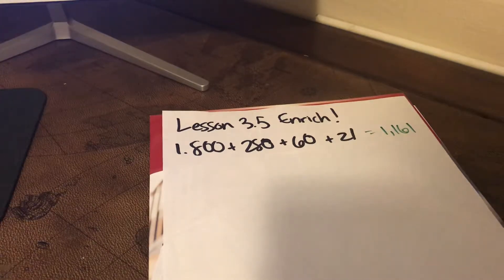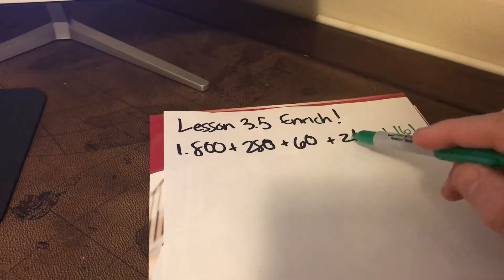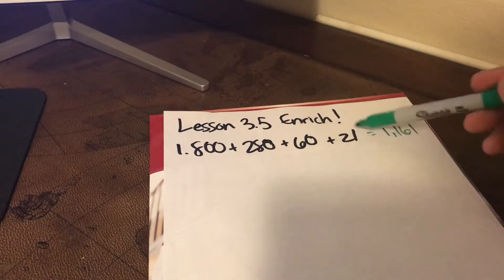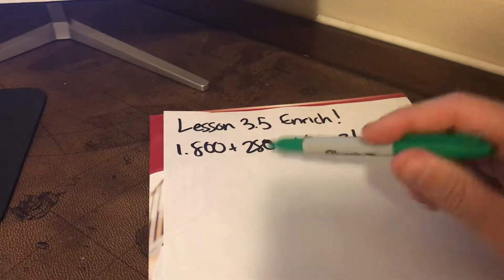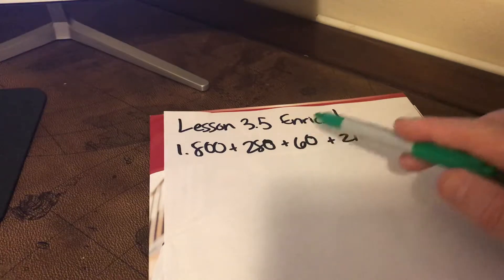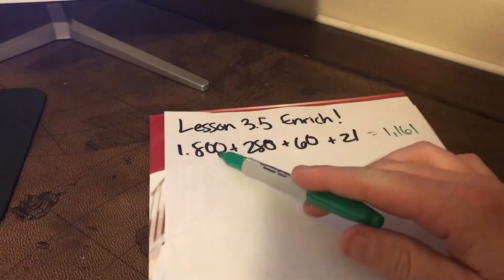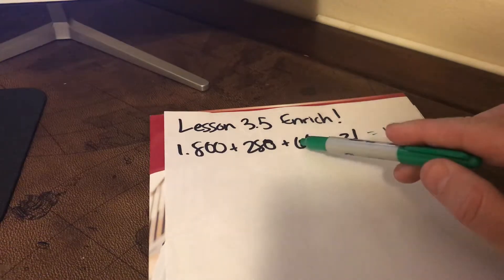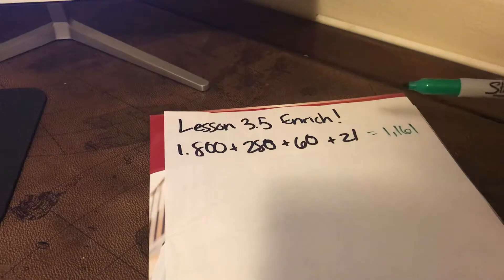Lesson 3.5 in Enrich kind of does it backwards for us. They've given us what's called the Multiplication Mystery — they've given us the partial products and want us to write the multiplication problem represented by these products, then write the product. Well, there's no reason why we can't write the product first. We already have the partial products, so all we have to do is add them up: 800 plus 280 plus 60 plus 21, which is 1,161.